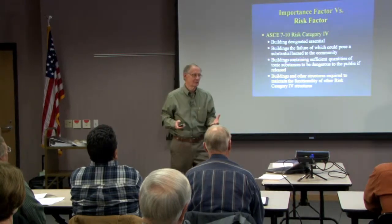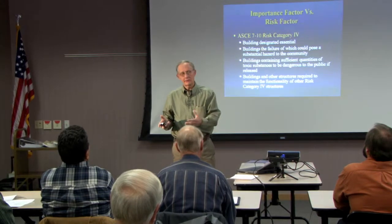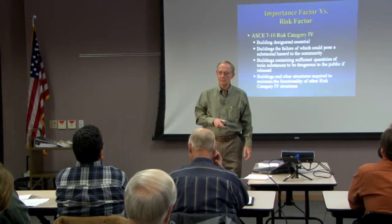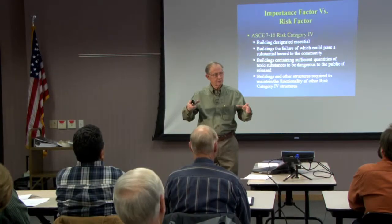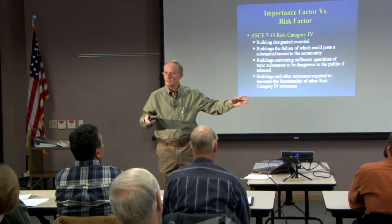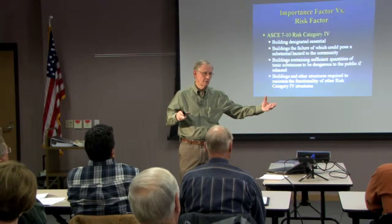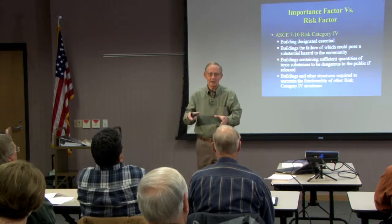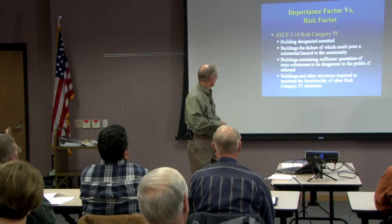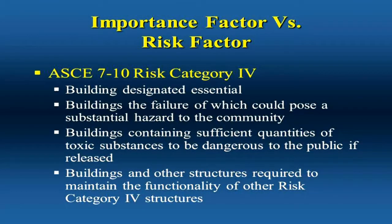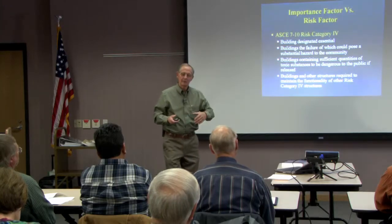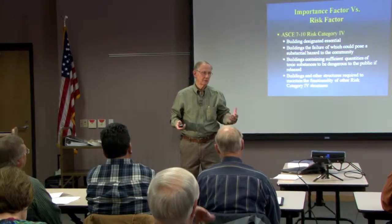Consider this example: I used to work for Dow Chemical. Dow has a plant in Texas that produces some pretty hazardous materials. The building where the product is made will need a roof system designed for category 4. But then there's the plant office — the main office — that also has to be designed, because we have structures required to maintain the functionality of other risk category 4 structures. And then there's the administration building in Midland, Michigan. If a hurricane in Texas is going to wipe out a plant, you want those people in Midland to be able to control operations and evacuate the plant. Do you design that building too, even though it's an office building? You might.